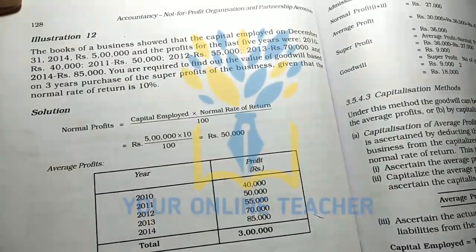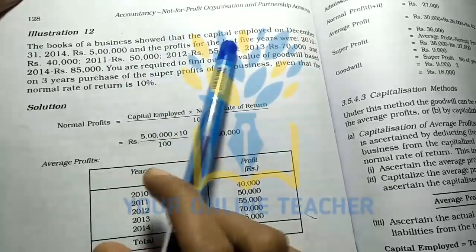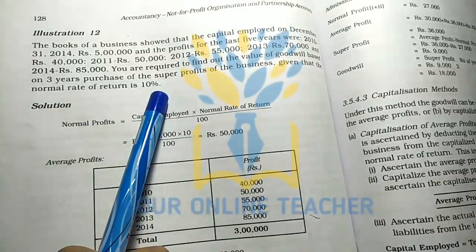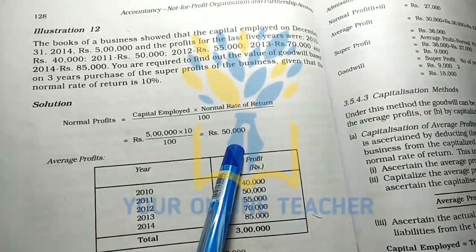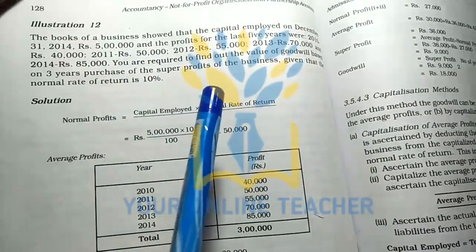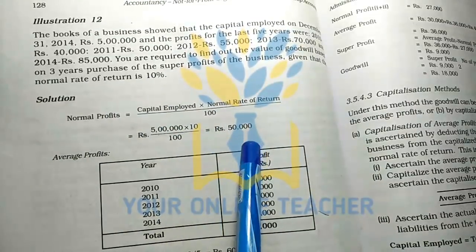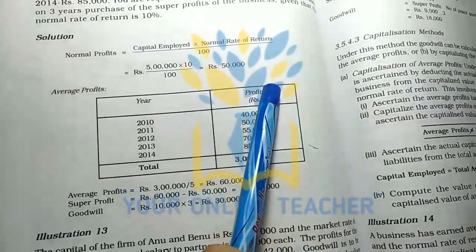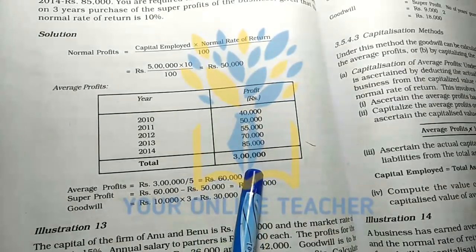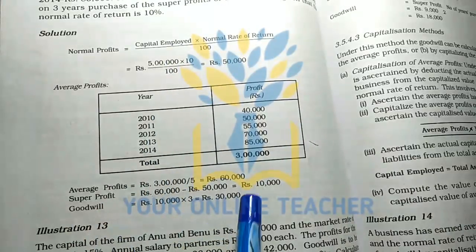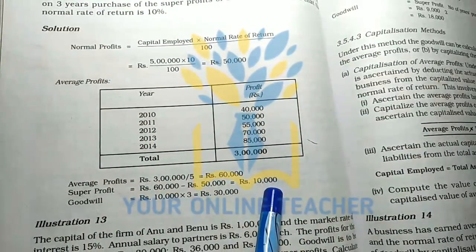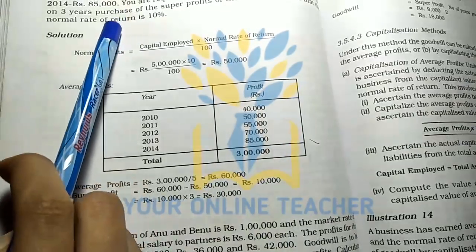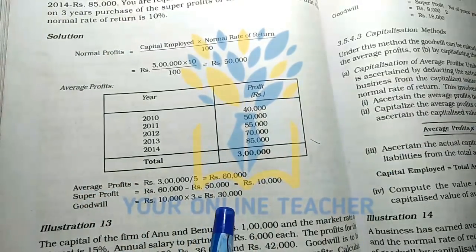For example: capital employed is 5 lakhs, number of years of purchase is 3, and the normal rate of return is 10%. Normal profit equals capital employed multiplied by the normal rate of return. Average profit is given. Super profit equals average profit minus normal profit. Goodwill equals super profit multiplied by years of purchase — for example, 10,000 × 3 = 30,000.